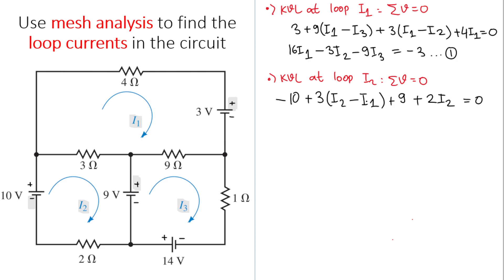Simplifying: minus 3i1, then 3 plus 2 gives 5i2. And minus 10 plus 9 gives minus 1, which moves to the right-hand side as positive 1. This is equation number two.